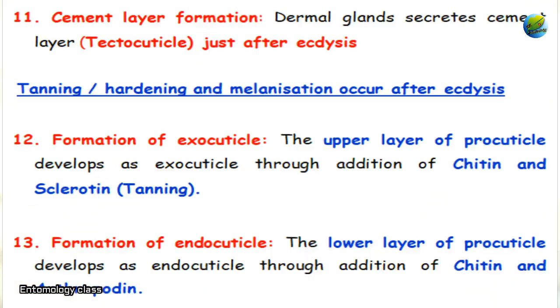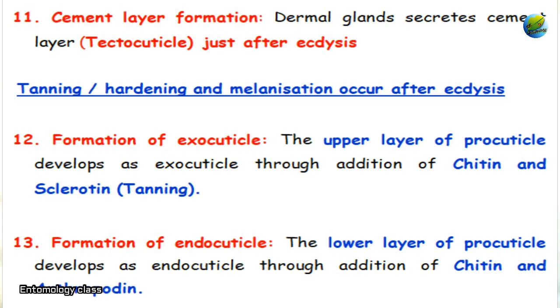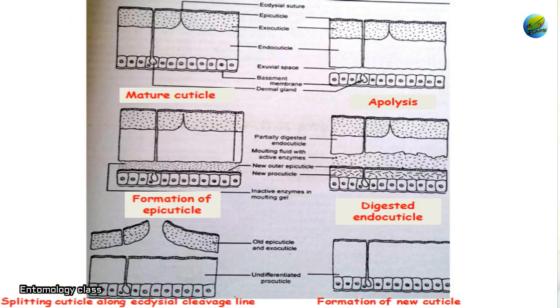The eleventh step is the formation of the cement layer: as soon as the old exocuticle is removed, the dermal gland secretes the cement layer over the wax layer. In the twelfth step, the exocuticle forms — the upper layer of the procuticle hardens through sclerotization, becoming the exocuticle via addition of chitin and sclerotin, a process called tanning. The thirteenth and final step is formation of the endocuticle: the lower layer of the procuticle develops into endocuticle through the addition of chitin and the protein arthropodin.